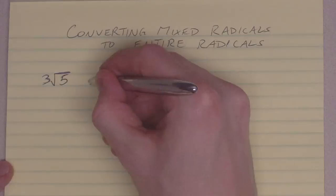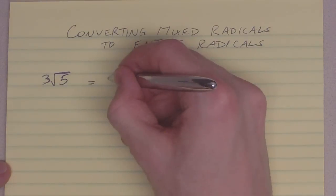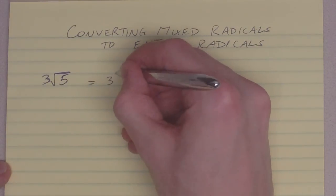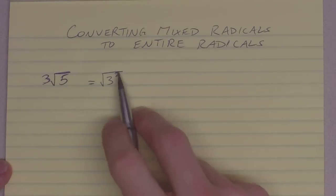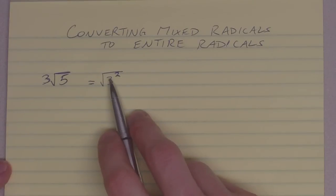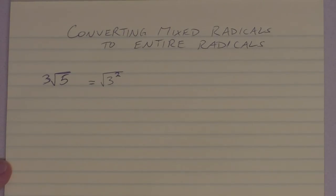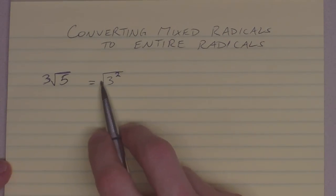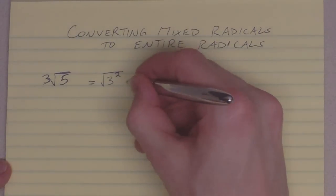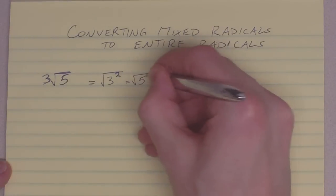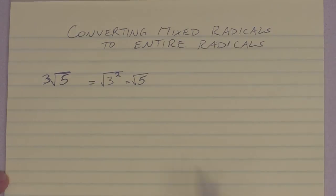I'm going to rewrite this number. I'm going to take that 3, I'm going to square it, and I'm going to take the square root of it. Squaring and taking the square root are opposite functions, so it's not going to change the number at all. If I punch this in on my calculator, square root of 3 squared, I'm going to end up with 3. I haven't changed that there, and I'm going to leave my square root of 5 there. So, I haven't changed anything, I've just rewritten that 3.